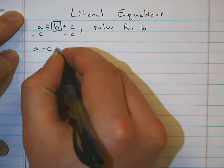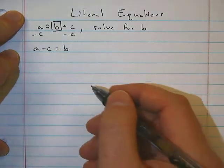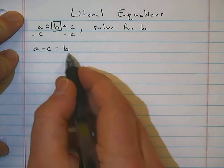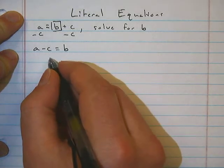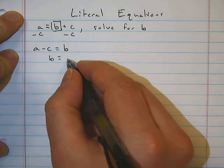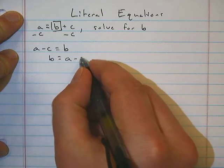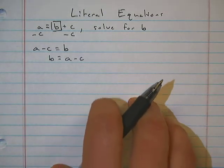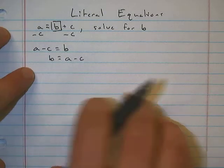So a minus c equals b. If you're like me and you like the isolated variable to be on the left, we can switch that because that's how the equal sign works. So b equals a minus c.